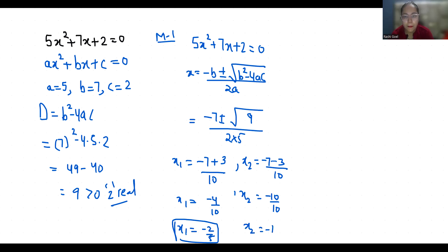Now method 2. 5x² + 7x + 2 = 0. I am going to use middle term split method so we can write 7x as 5x + 2x + 2 = 0.